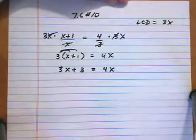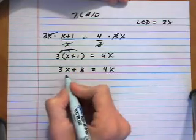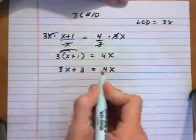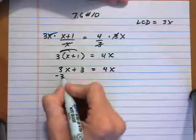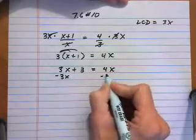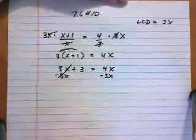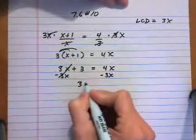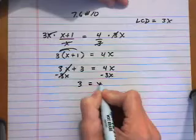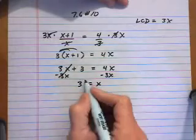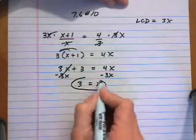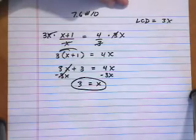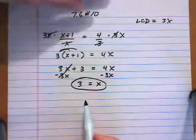Let's take away 3x on both sides and move the x's to the right. They're gone on the left, and we have 3 equals x. So there's our solution to the rational equation.